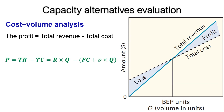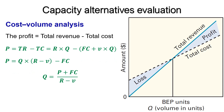Total profit can be computed using the formula: P = TR − TC = R×Q − (FC + V×Q). Rearranging terms: P = Q×(R − V) − FC. The difference between revenue per unit and variable cost per unit is known as the contribution margin. The required volume needed to generate a specified profit is: Q = (P + FC) ÷ (R − V).